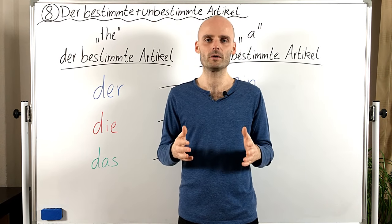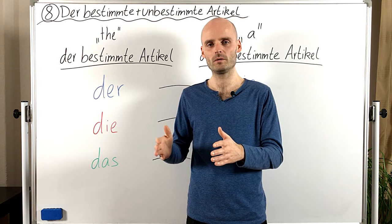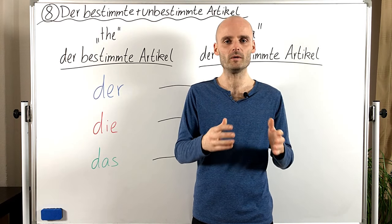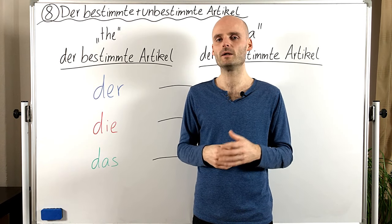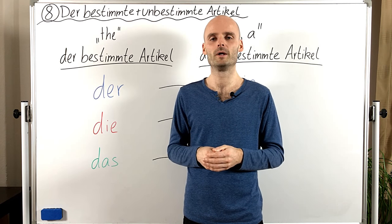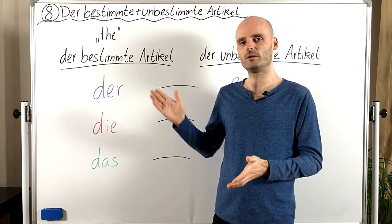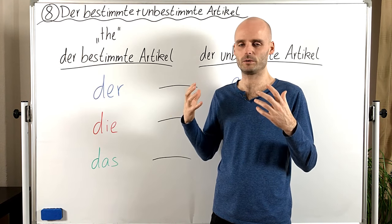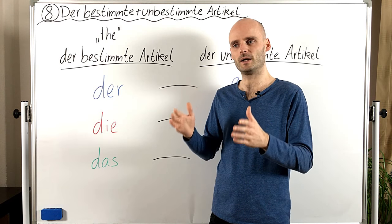So I strongly recommend you from now on, if you learn nouns, learn them together with the article. Always. It will make your life so much easier later on in your process of learning German. And to make it easier, I chose three colors, because it's easier for the brain to memorize if there is a color involved.